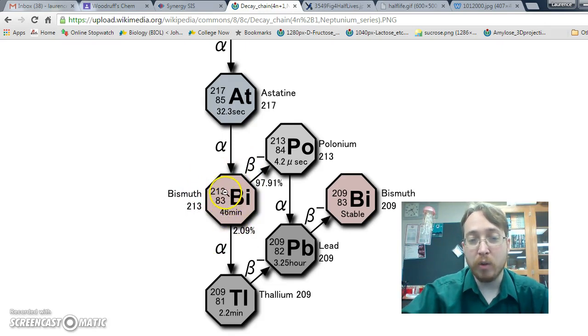And then in beta decay, we have a neutron reforming into a proton and an electron. Well, we add one proton, so 83 becomes 84. But because we both lose a neutron, which is one mass, and we gain a proton, which is one mass, our mass stays the same. And then the electron leaves, so we don't have to worry about that. So we go from bismuth to polonium-213. That is our decay chains.